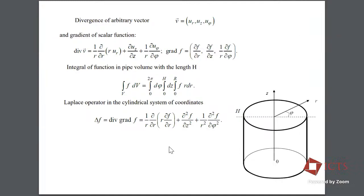First, we will consider Navier-Stokes equations, which describe the motion of fluid. This is the simplest case in which we consider the gradient of divergence and gradient of different functions. This is displacement in different directions. We will consider a cylindrical system of coordinates: U_R is displacement in the direction of the radius.